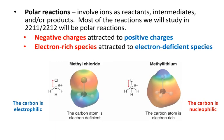I've got two similar compounds where I've got a methyl group. On the left, it's attached to a chlorine, and on the right, it's attached to a lithium. We know that chlorine is more electronegative than carbon, and so it draws electron density away from the carbon into the chlorine. This results in the carbon becoming partially positive. On the right-hand side, carbon is more electronegative than lithium, and so the carbon pulls electron density away from the lithium, and the carbon becomes partially negative.